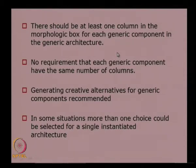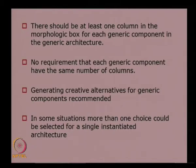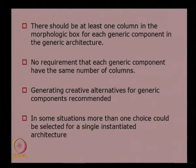Some important points when developing the morphological box: there should be at least one column for each generic component in the generic architecture, meaning every generic component must have alternatives identified. It is not necessary that each generic component has the same number of alternatives — some may have two, others may have five or six, depending on the component. There is no rule requiring an equal number of alternatives across generic components.